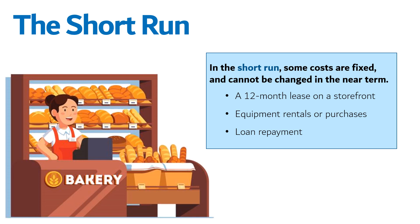In the short run, some costs are fixed and cannot be changed in the near term. An example is committing to a 12-month lease on a storefront — no matter what you produce, you are locked in to making those rent payments, and so this cost sets a short run of 12 months. After the 12 months, you could renegotiate, move, or shut down. But for the next 12 months, your options are constrained by this agreement. Similar logic applies to equipment rentals, purchases of equipment, and any loans you take out to start or run your business. These fixed costs limit your options for expanding or scaling down until you reach a point where new decisions can be made.